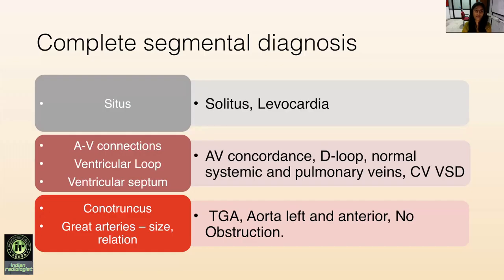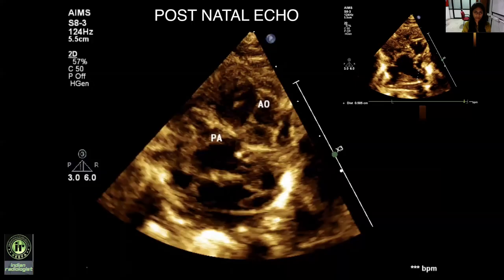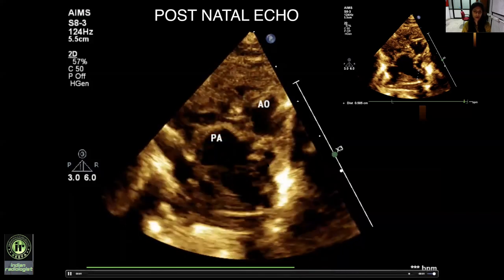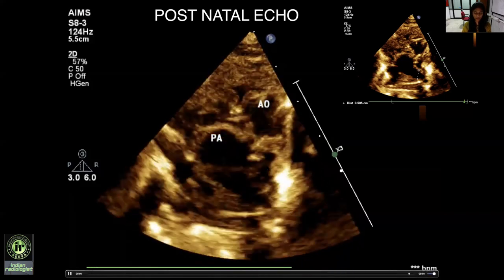So the complete segmental diagnosis is situs solitus with levocardia, AV concordance with D-looped ventricles, normal systemic and pulmonary venous drainage and conoventricular VSD, transposition of great arteries with aorta left and anterior with no obstruction. The diagnosis was confirmed by postnatal echo showing transposition of great arteries with aorta anterior and to the left of the pulmonary artery.